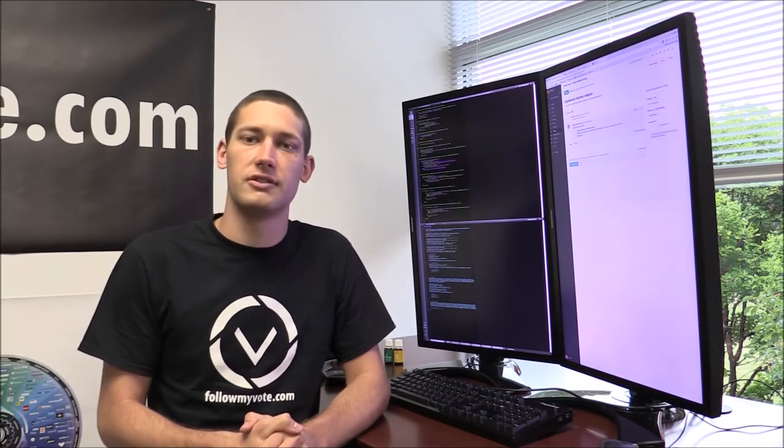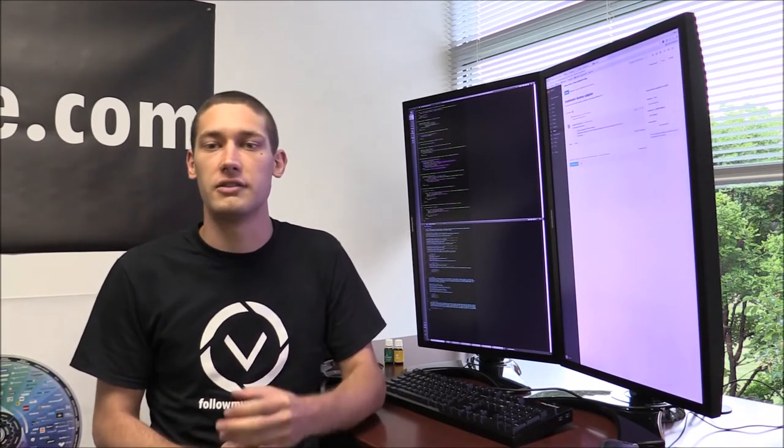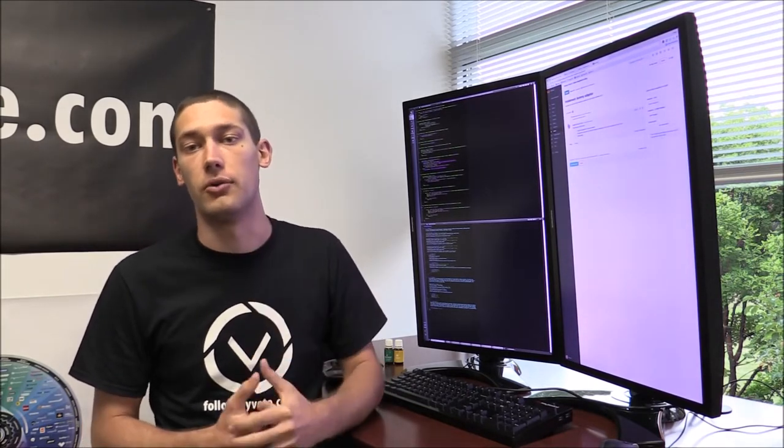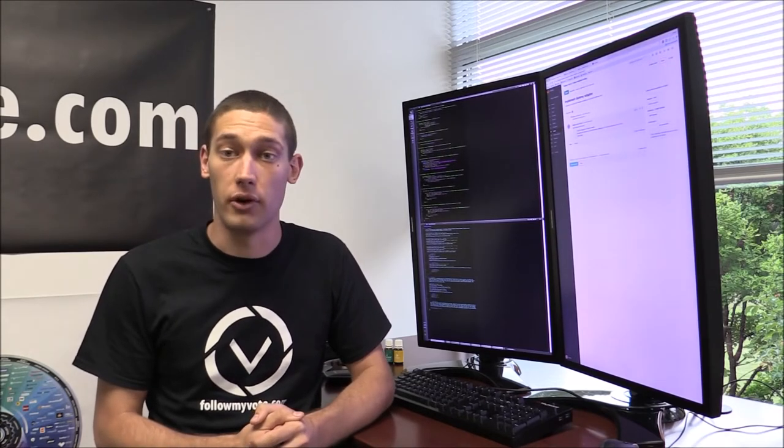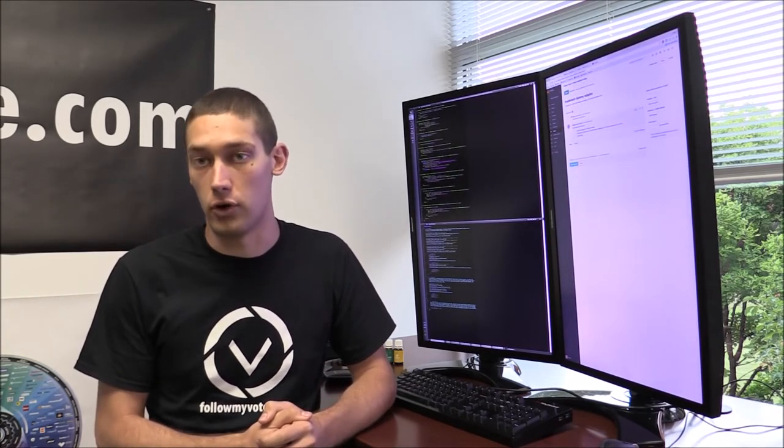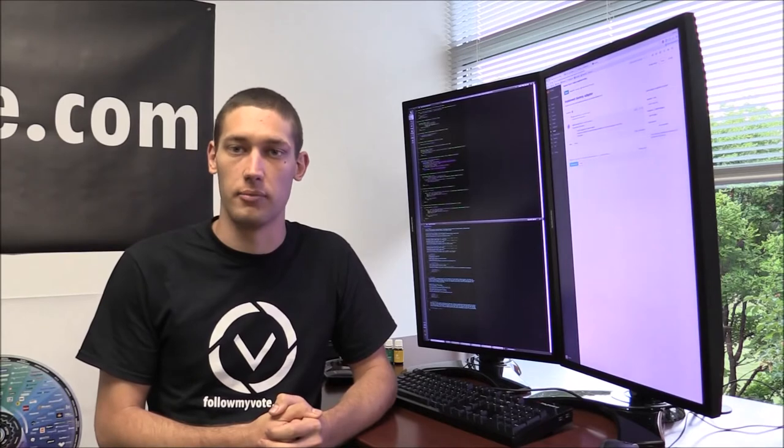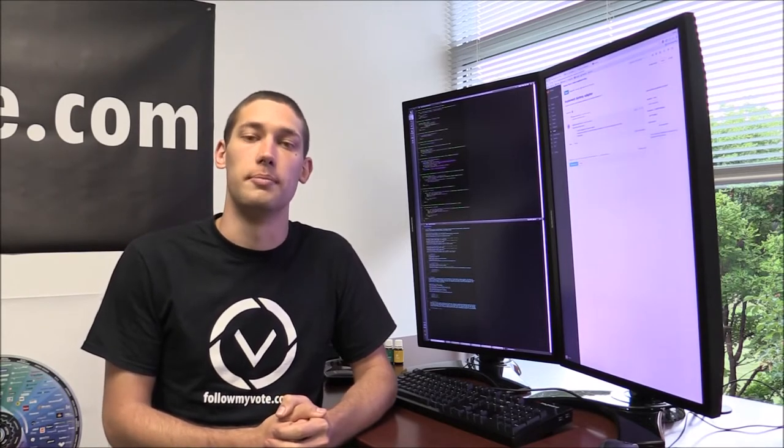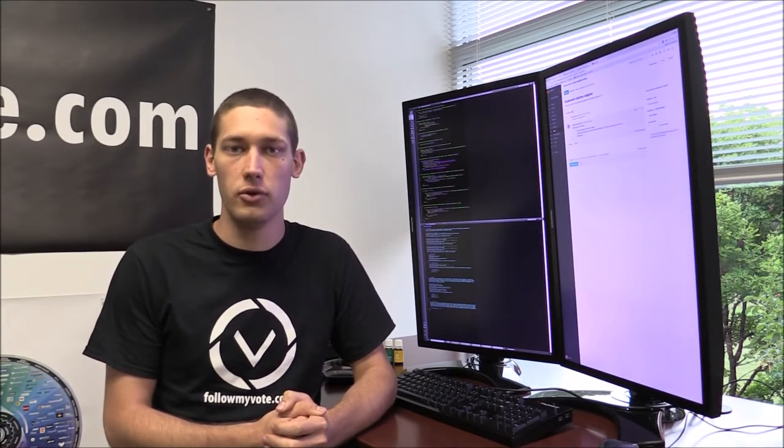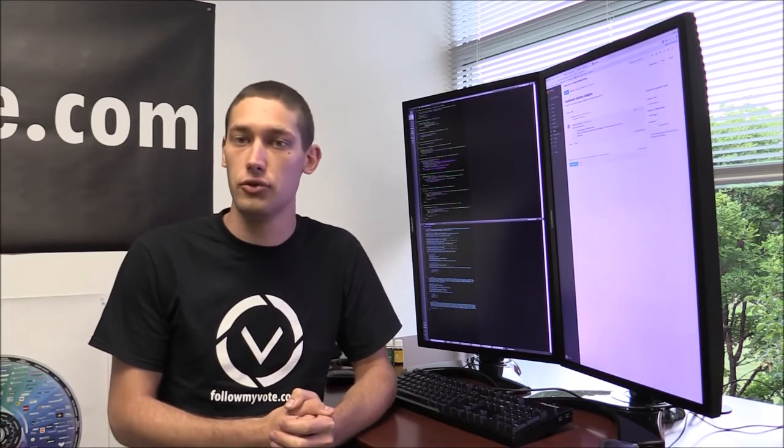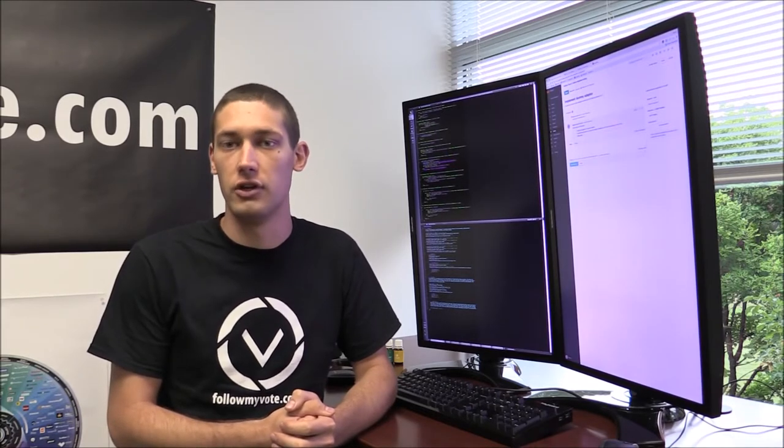Now blockchain systems are typically comprised of two major components. The first component is the peer-to-peer network. This is the mechanism by which the many computers which manage the database communicate new changes to that database which are called transactions.